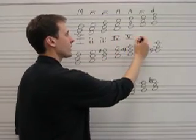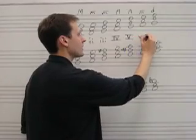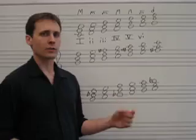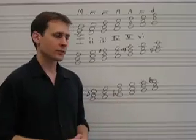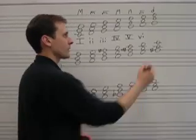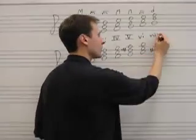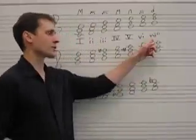Dominant is major. Submediant is minor. And then we get to the leading tone scale degree, which, as you remember, is diminished. Diminished is indicated with a lowercase Roman numeral, but then we also add a little circle right there to the side.